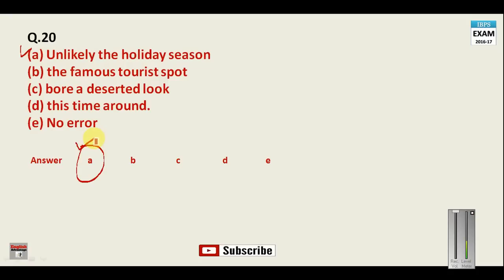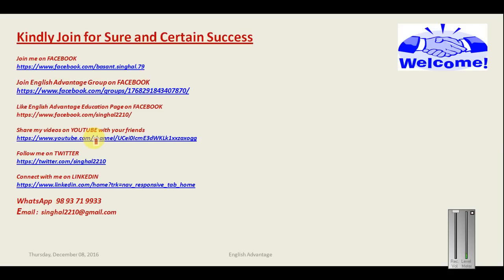Whatever marks you have got out of 20, please add all your marks and send me your final score through the comment box. These are my links — you must join all of them. You can join me on Facebook; get all links from the front page of the English Advantage YouTube channel.